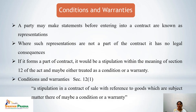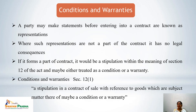Next we come to conditions and warranties. When a seller sells goods, certain representations are made to induce the buyer to purchase. If those representations are not part of the contract, there are no legal consequences. But if those representations form part of the contract — coming under the stipulations of Section 12 of the Sale of Goods Act 1930 — they may be treated as a condition or a warranty.